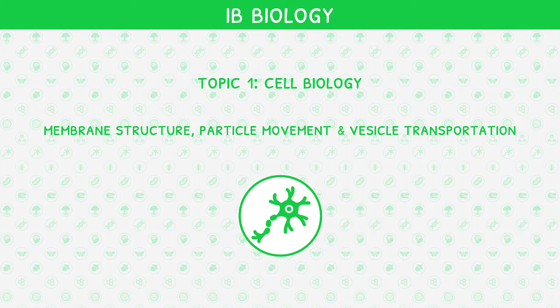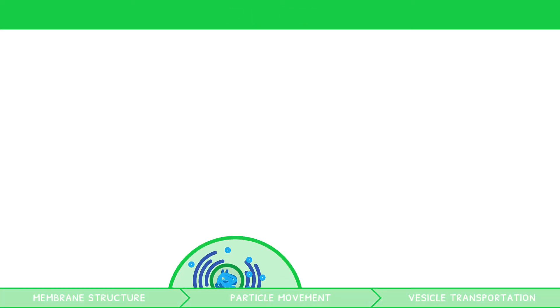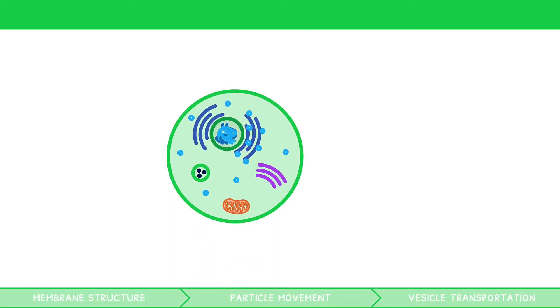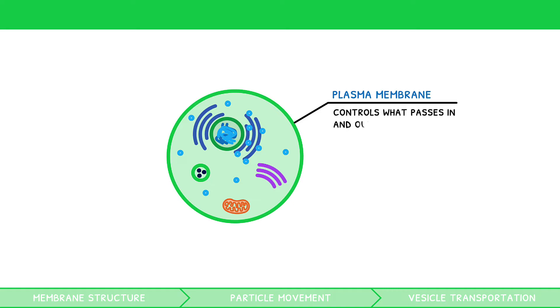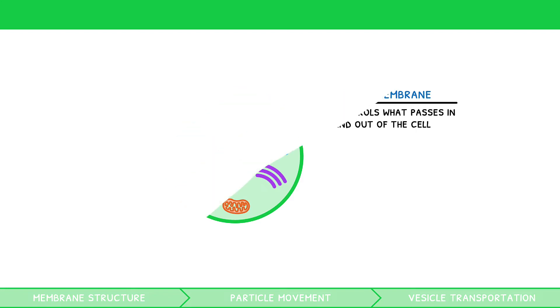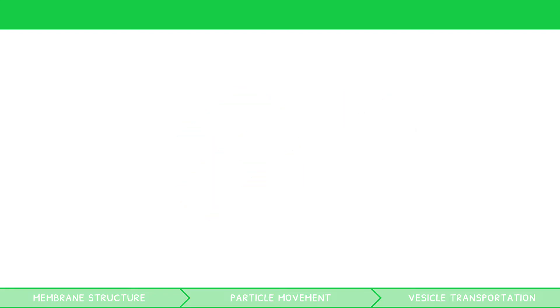As covered in our previous video, all cells contain a plasma membrane, which controls what passes in and out of the cell. It is therefore important that you can understand the structure and function of this membrane.